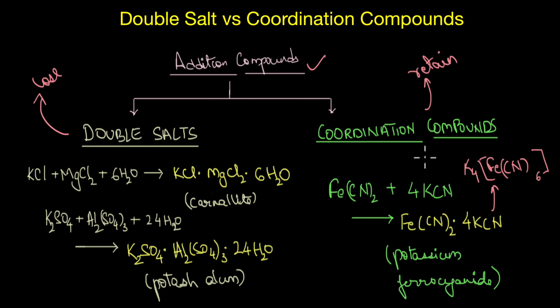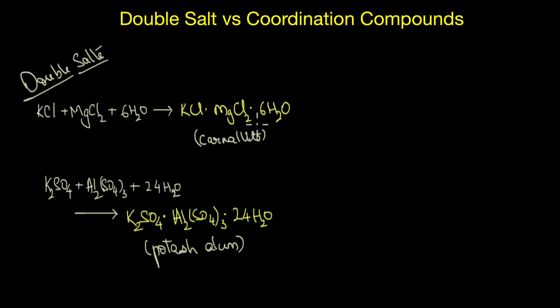What do I mean by that? When crystals of carnalite are dissolved in water, the resulting solution exhibits properties of potassium, magnesium, as well as chloride ions. Similarly, potash alum in solution shows properties of potassium, aluminium, as well as sulphate ions.